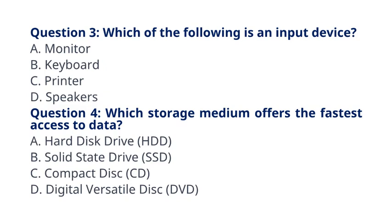Question 4: Which storage medium offers the fastest access to data? A. Hard disk drive (HDD), B. Solid state drive (SSD), C. Compact disk (CD), D. Digital versatile disk (DVD). The correct answer to question 4 is option B: Solid state drive, SSD. Explanation: SSDs offer faster access to data compared to traditional HDDs because they use flash memory technology.